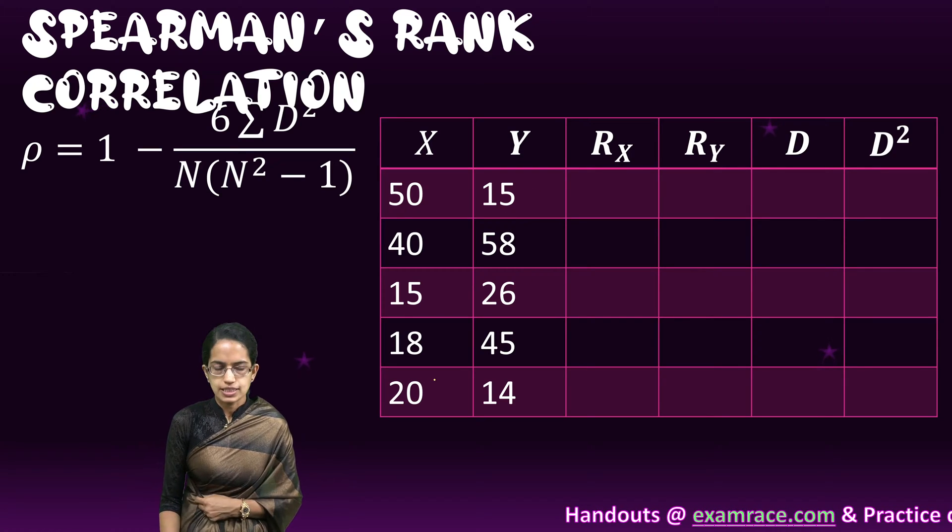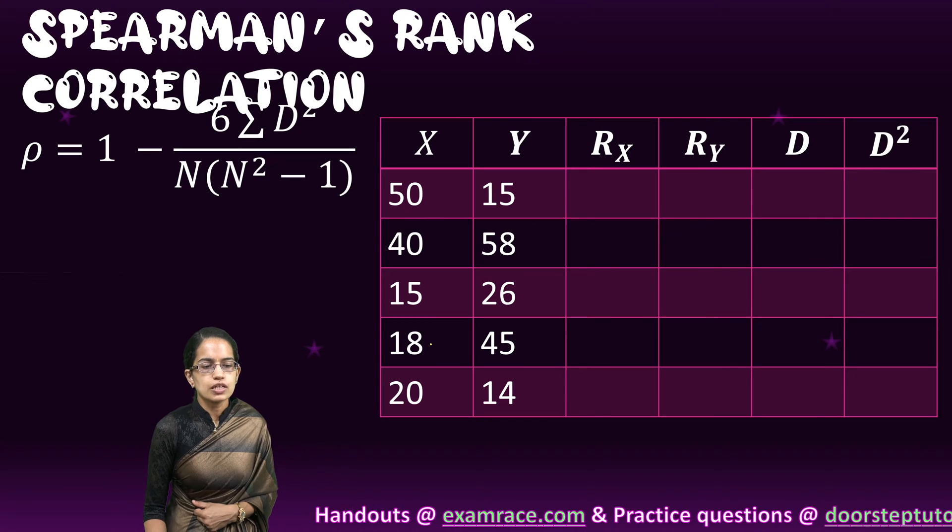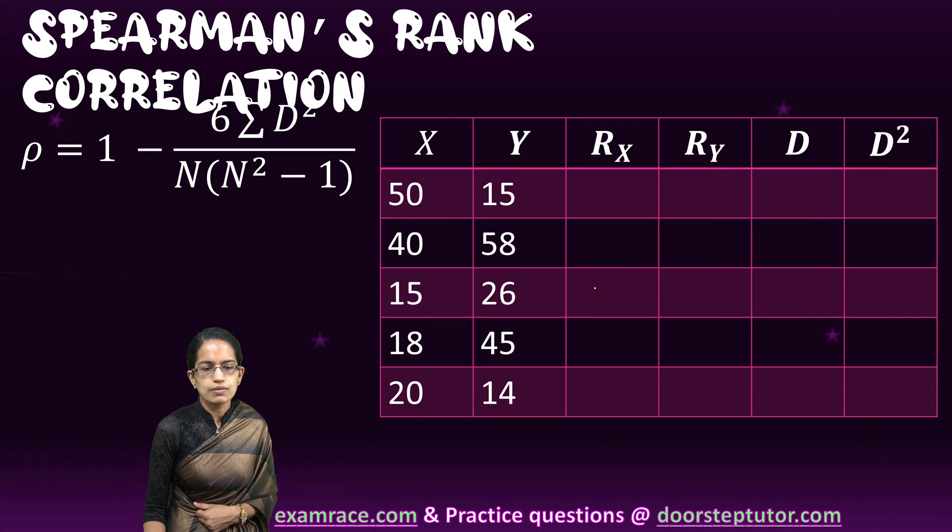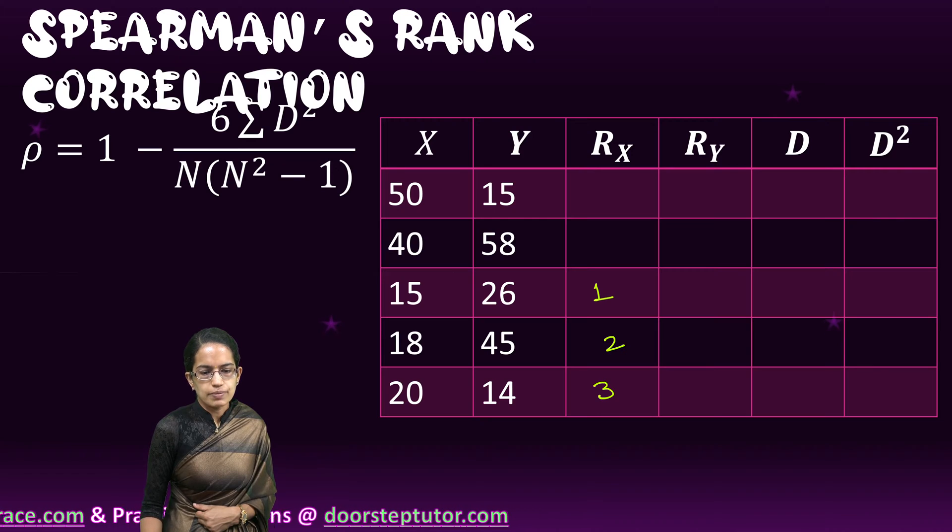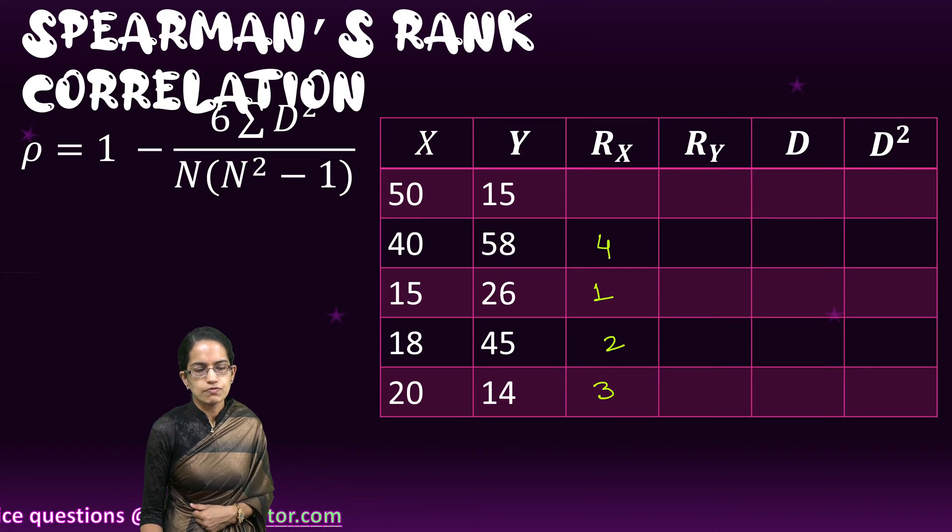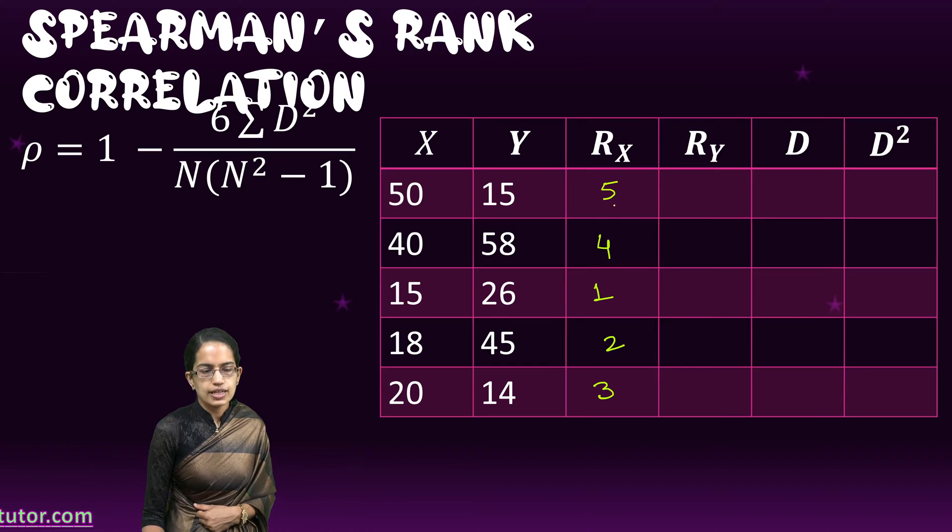First take X. The values are 50, 40, 15, 18 and 20. So 15 becomes the first rank, 18 becomes the second rank, 20 becomes the third rank, 40 becomes the fourth rank, and 50 becomes the fifth rank.